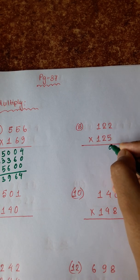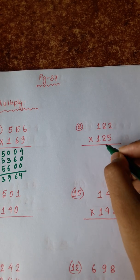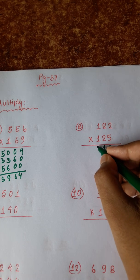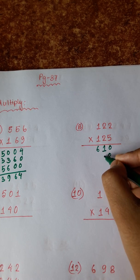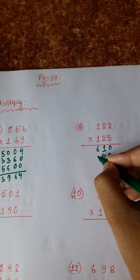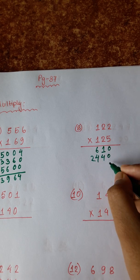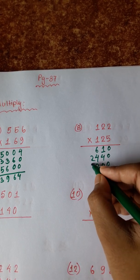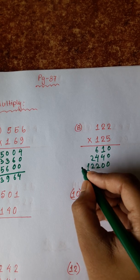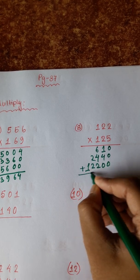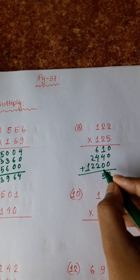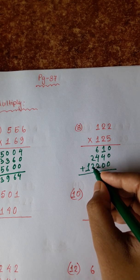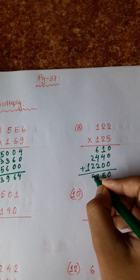5 twos are 10. 5, 1 — 5 twos are 10 plus 1, 11. 5 plus 1, 6. 2 twos are 4. 2 twos are 4, 2 ones are 2. 2 ones are 2, 1 one is 1. 5, 6, 4. 10 plus 2, 12. 1, 2, 1. 1, 3 plus 2, 5.